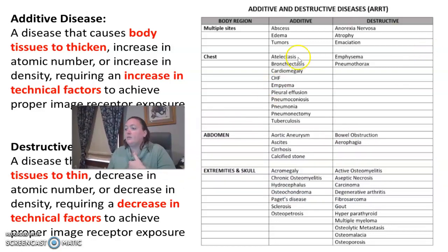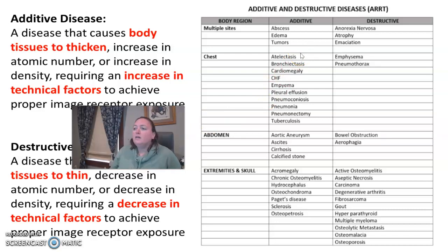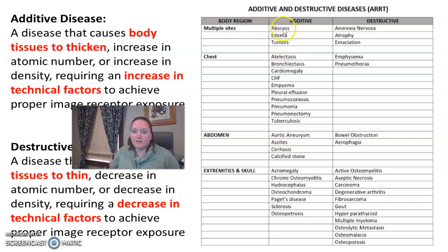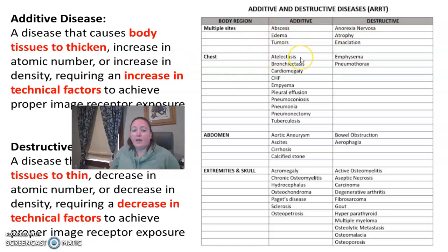When you look at this chart — and we're going to break down some of these over the next few videos — what are some additive and destructive things you could see in multiple areas? Tumors, abscesses, or atrophy might be seen over a variety of sites.